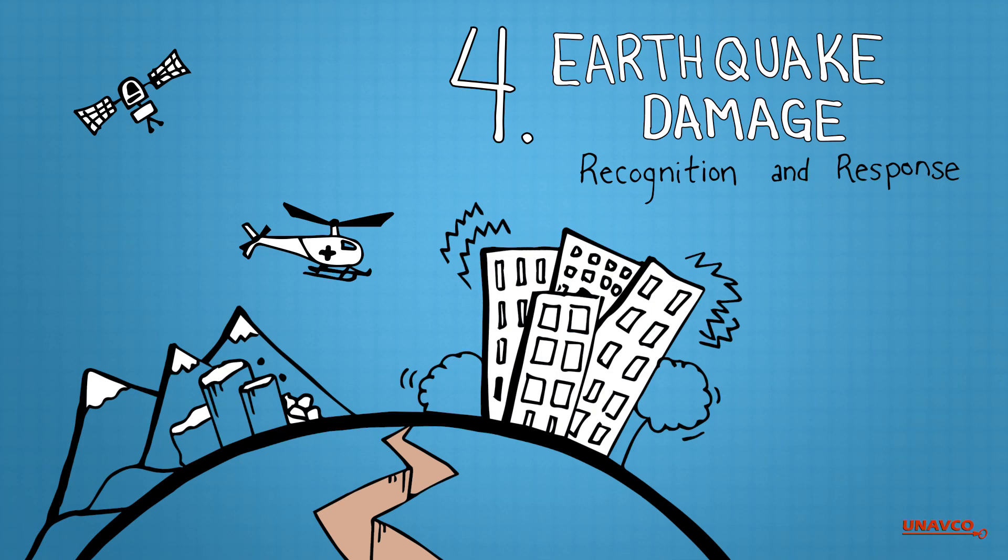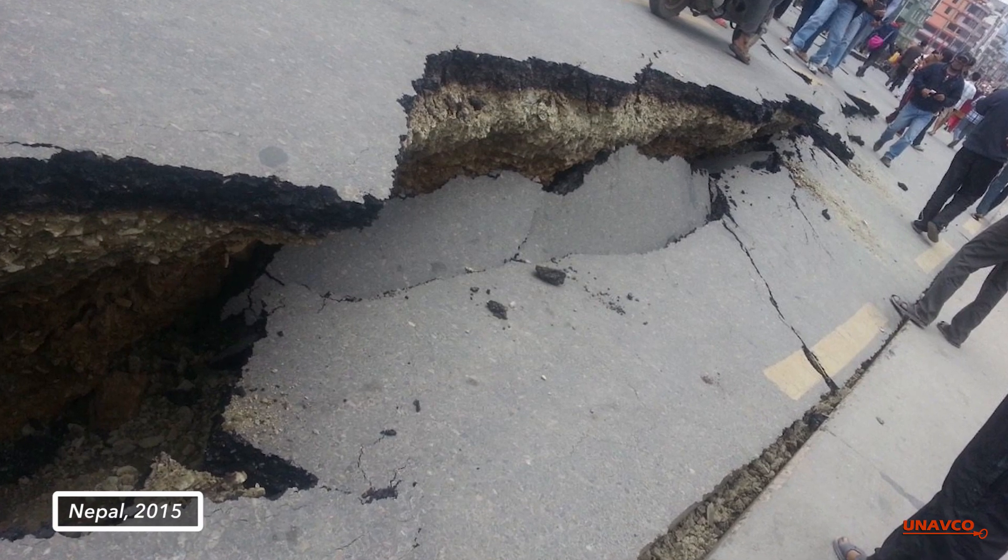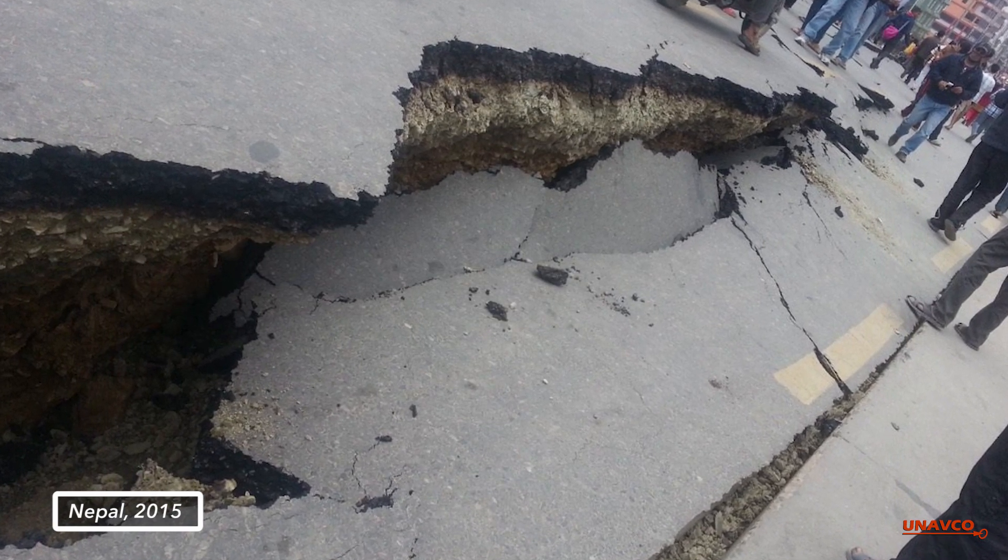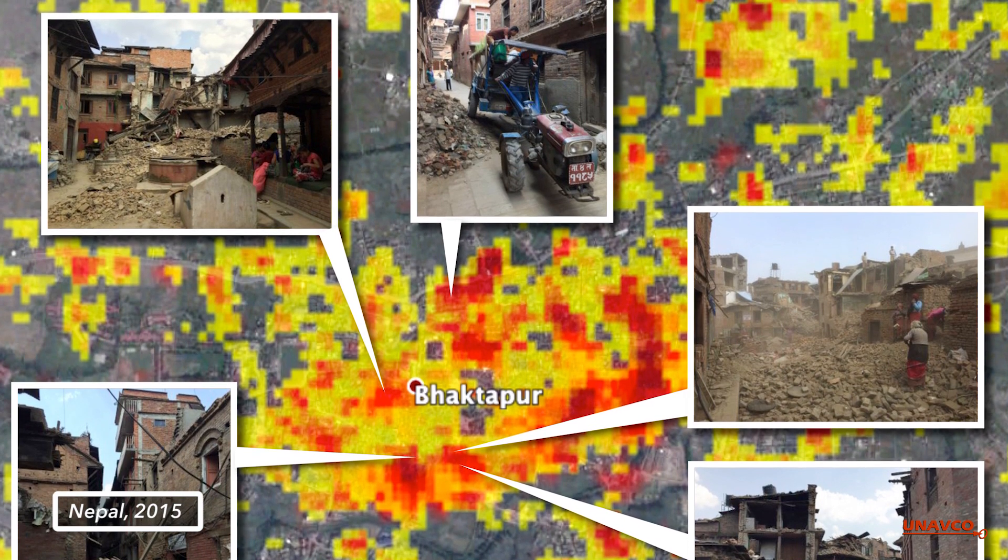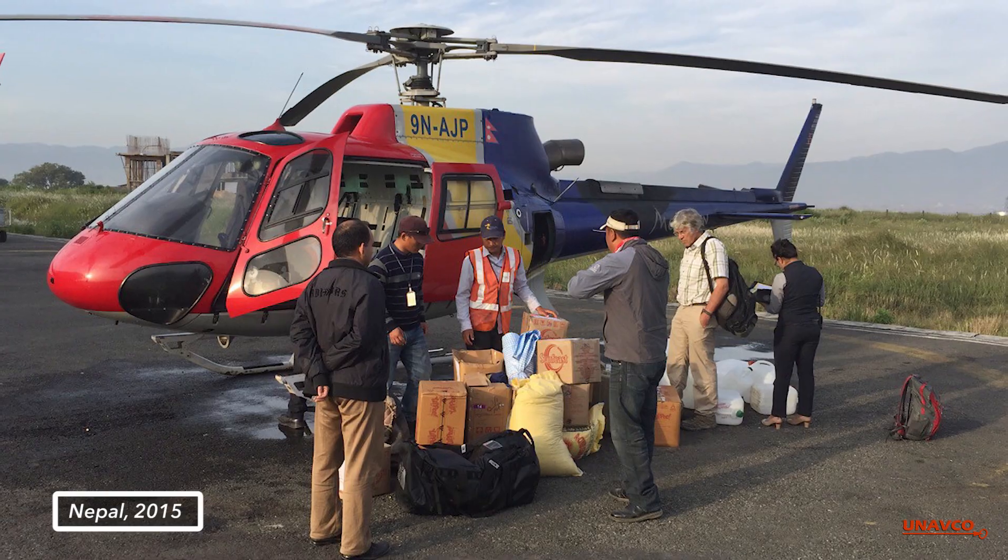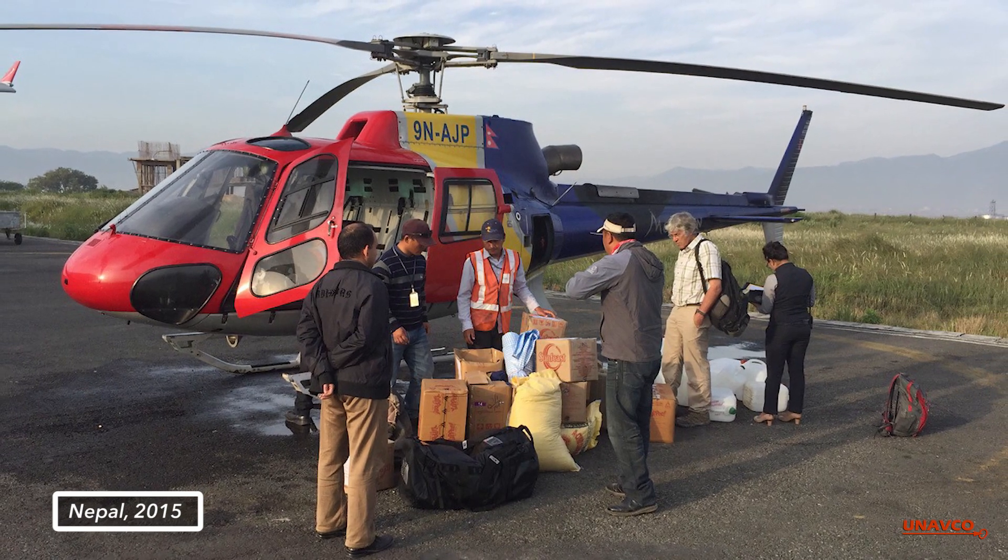Satellite measurements can be used in a number of ways to better understand and respond to devastating earthquakes across the globe. For example, geodesy can be used to quantify ground surface ruptures and identify rock fall hazards. Additionally, remote sensing can be used to detect communities that suffer the greatest damage and deliver aid resources by priority.